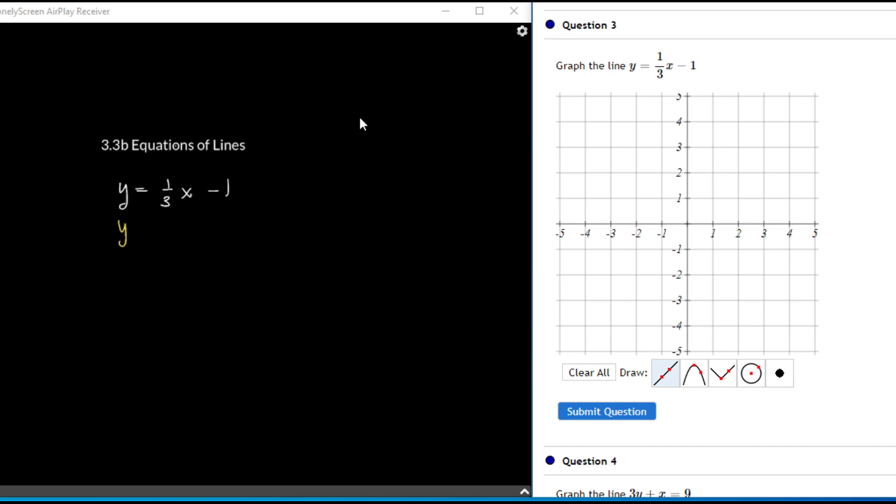This is in the form y equals mx plus b. That tells us m equals 1/3 and b equals negative 1. When you're graphing this, you want to always start with b because it's your y-intercept.